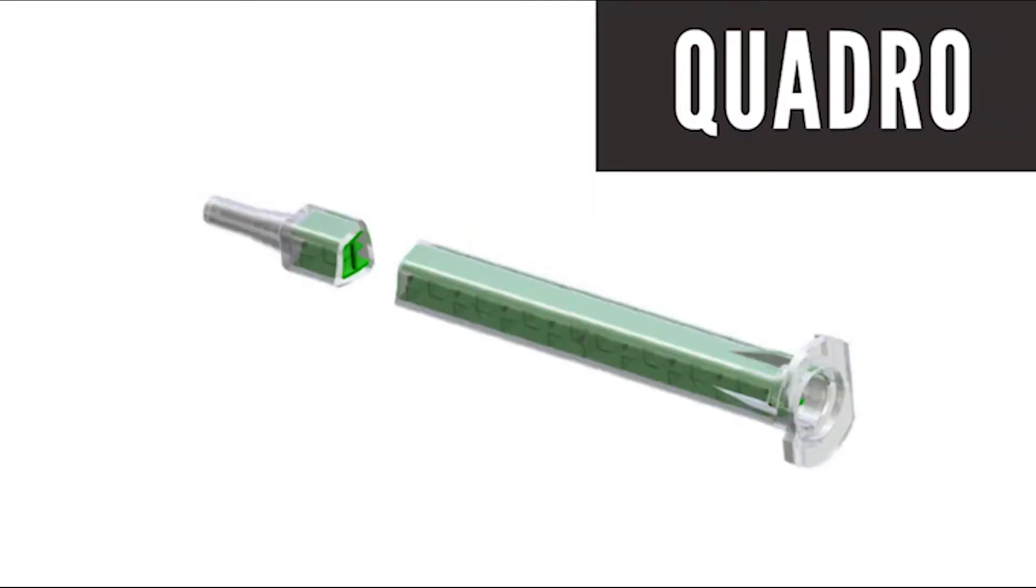Quadro mixers are the newest technology to two-part cartridge dispensing and are square in shape. Quadro mixers allow for more complete mixing in a shorter nozzle. The advantage of Quadro style nozzles is that there is less wasted adhesive left over in the nozzle and users can get closer to their substrates when dispensing.